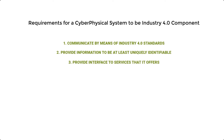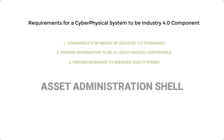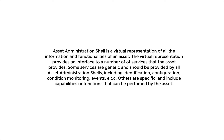Simply put, the requirements for a cyber-physical system to be called an Industry 4.0 component are: one, it needs to be able to communicate by means of Industry 4.0 standards; two, it needs to be able to provide information to be at least uniquely identifiable in an Industry 4.0 system; and three, it needs to provide other Industry 4.0 components an interface to the services that it offers. To capture and present this information in a uniform and consistent manner, Industry 4.0 uses what is called an Asset Administration Shell. An asset administration shell is a virtual representation of all the information and functionalities of an asset, providing an interface to services including identification, configuration, condition monitoring, events, and more.